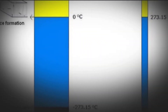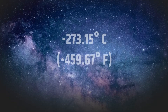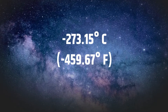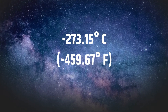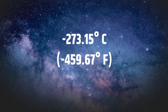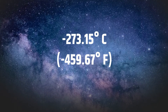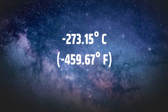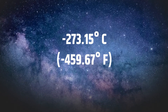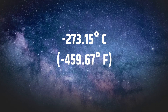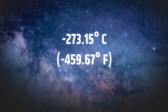Let's start from the lowest possible temperature: minus 273.15 degrees Celsius, also known as absolute zero, which is the coldest temperature in the universe. It's impossible to reach, because if any object reaches minus 273.15 degrees Celsius, its volume will be zero.